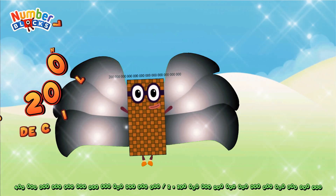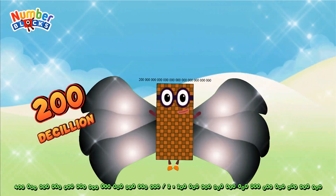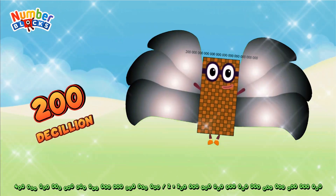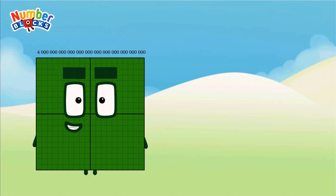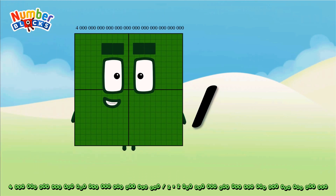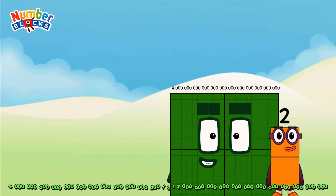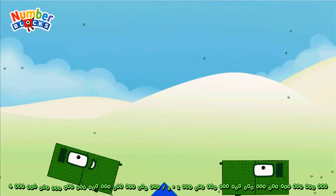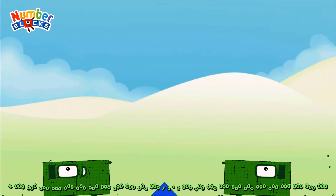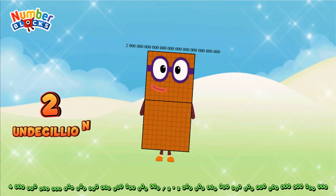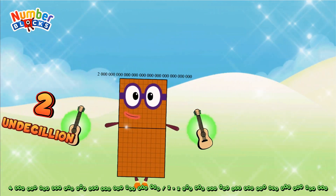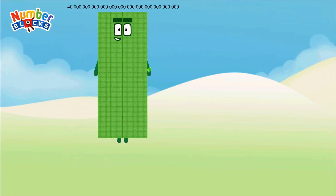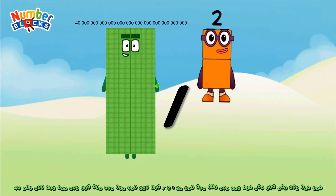Two hundred octillion. Four hundred octillion divided by two equals two hundred octillion.